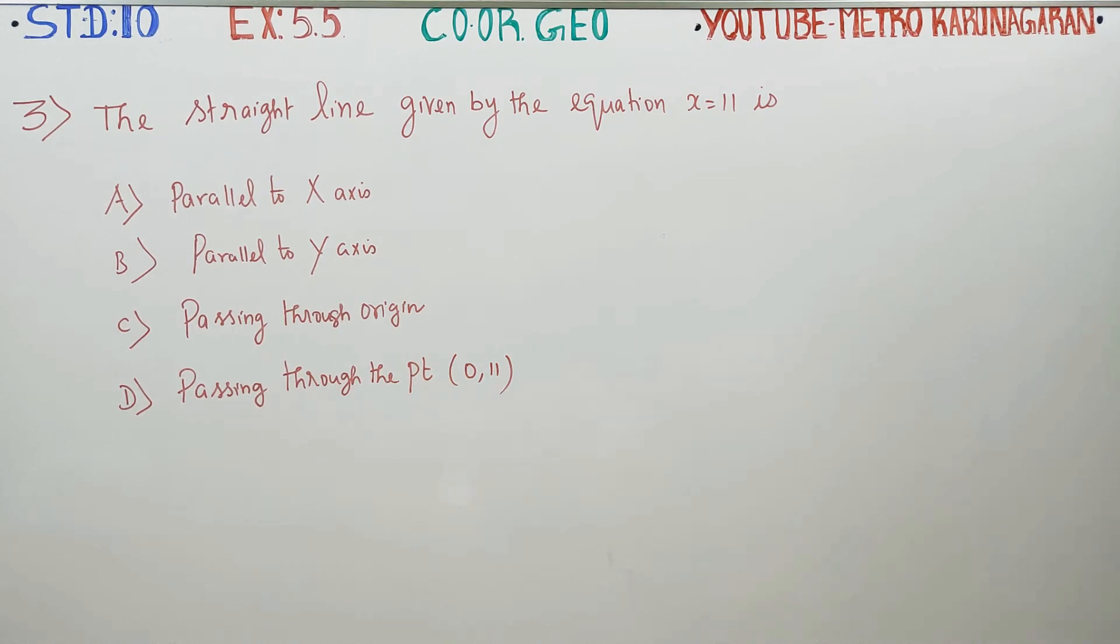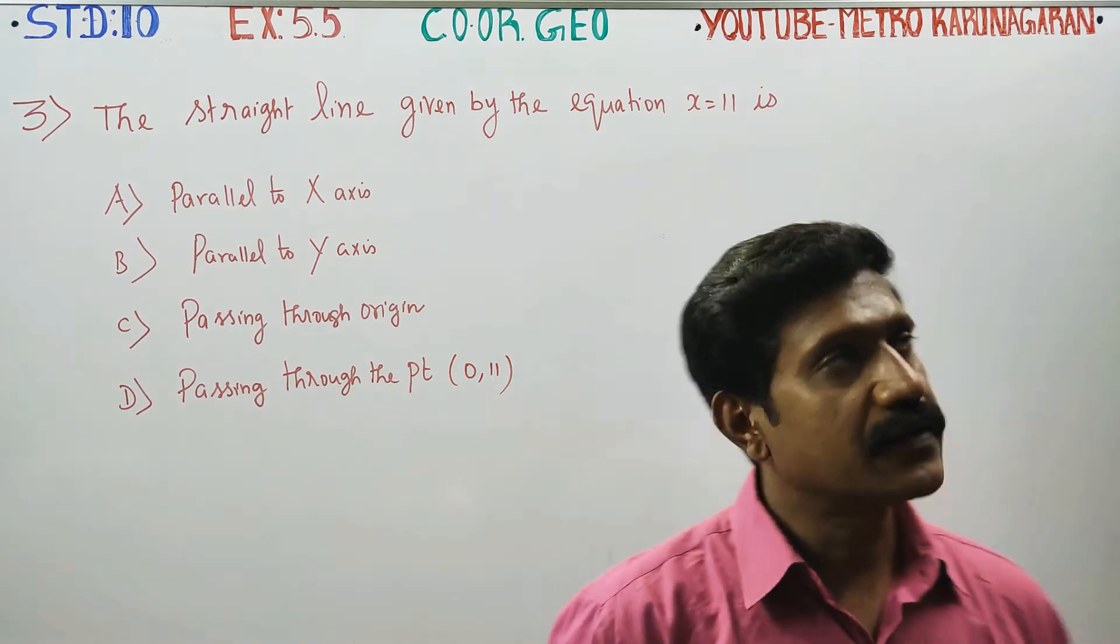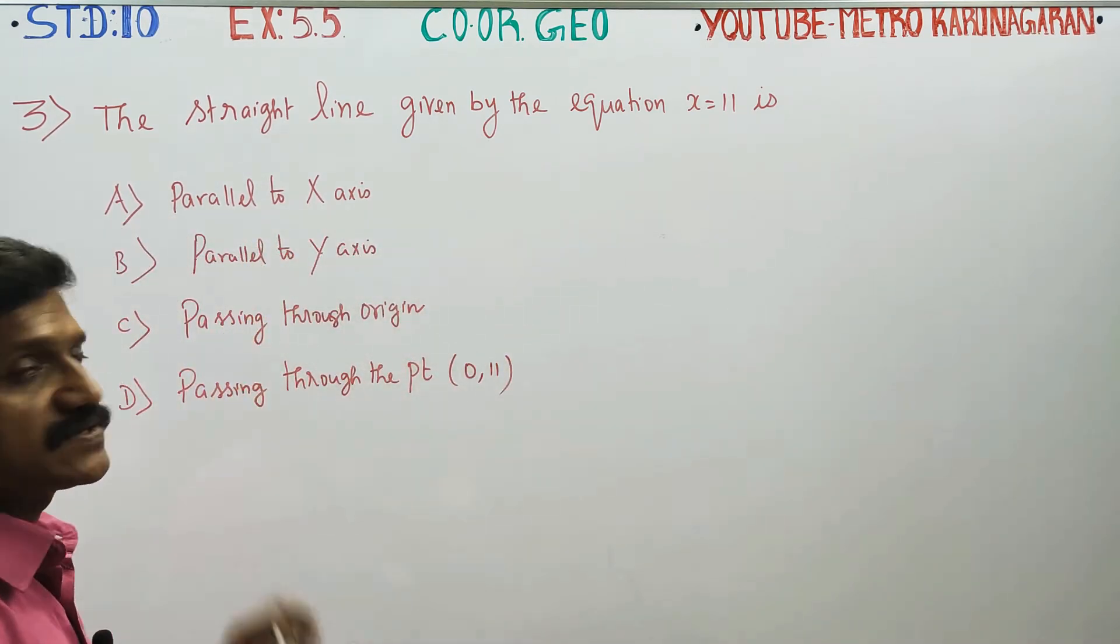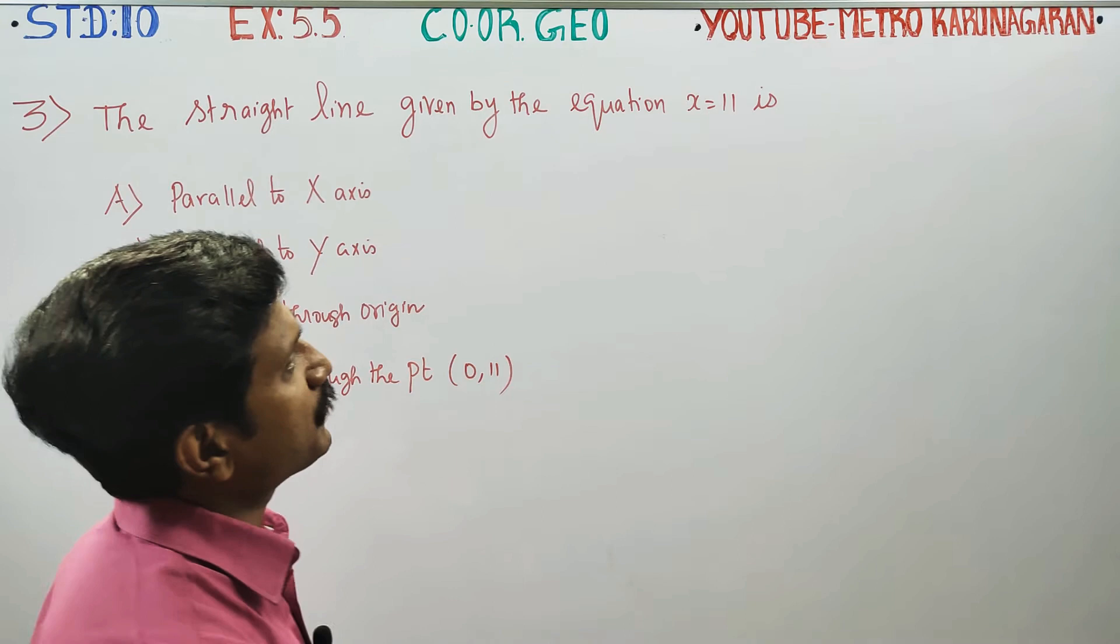Dear 10th standard students, in exercise number 5.5 coordinate geometry, the straight line given by the equation X equals 11 is parallel, passing through. First of all...